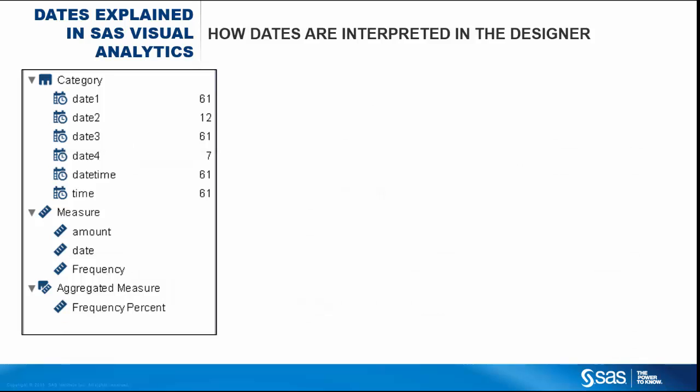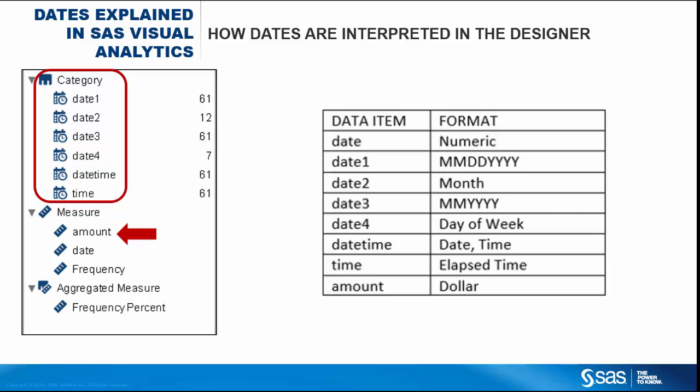When our table is loaded to memory and added to a designer report as a data source, the columns with date, date-time, and time formats are interpreted as date, date-time, and time category data items. Notice that the date column with no stored format, however, is interpreted as a numeric measure data item. Visual Analytics assigns the appropriate formats to the data based on the format stored in the table, and you'll notice that each format name is displayed in a form that's more easily interpreted than the original SAS format name.